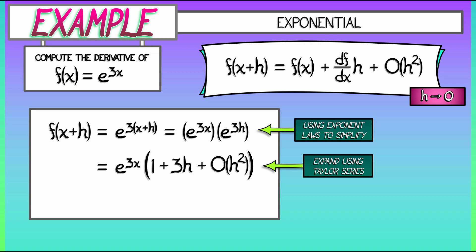And now we can distribute this multiplication. What do we get? We get e to the 3x times 1 plus e to the 3x times 3h. That's 3e to the 3x times h. And then we get e to the 3x times big O of h squared. But that just all goes into the trash. That's all big O of h squared.